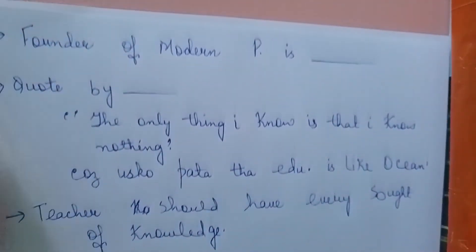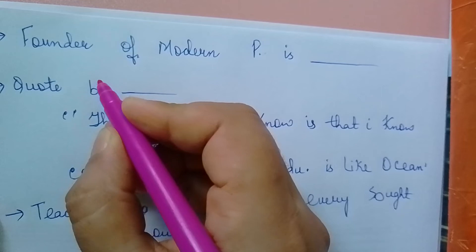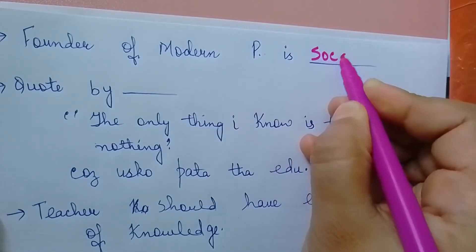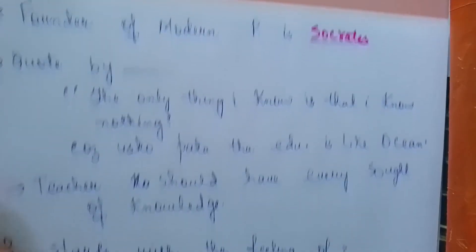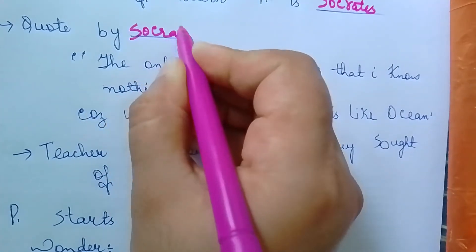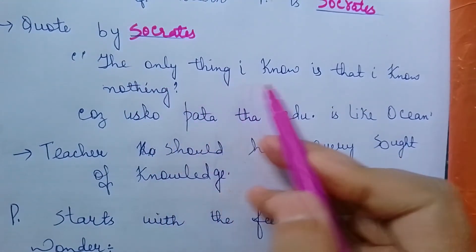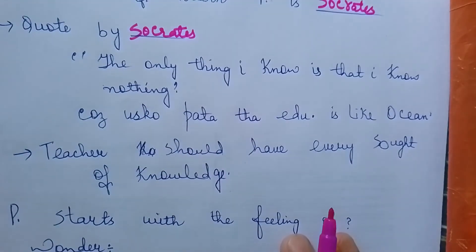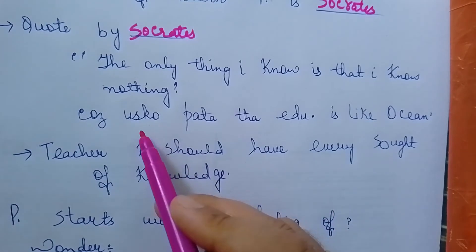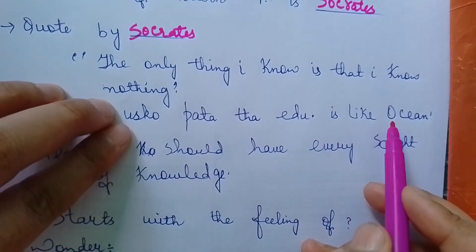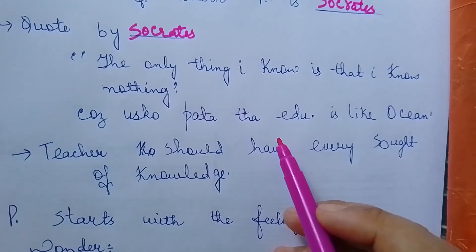Socrates is the founder of modern philosophy. A quote by Socrates: 'The only thing I know is that I know nothing.' He had a lot of knowledge, but he had no pride. He always said he knows nothing. He had no arrogance because he knew education is like an ocean, a very deep and vast field. The more you know, the less it is.